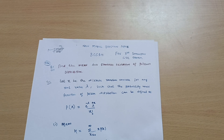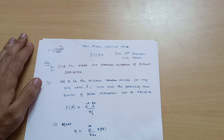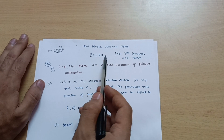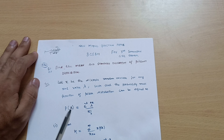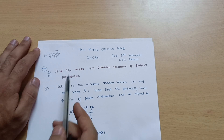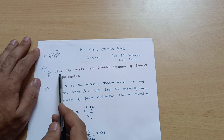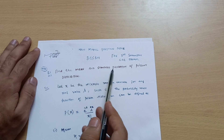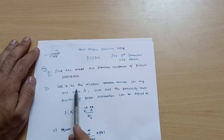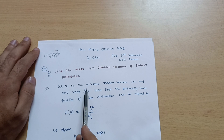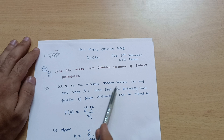Hello everyone and welcome back. We are discussing the model question paper for the third semester CSE stream students, mathematics subject code BCS 301. Today let me explain the derivation: find the mean and standard deviation of Poisson's distribution. In the examination you should write in this way only, so that you will get full marks.